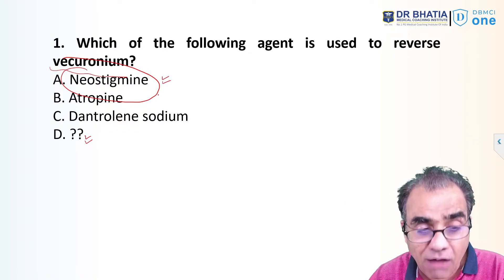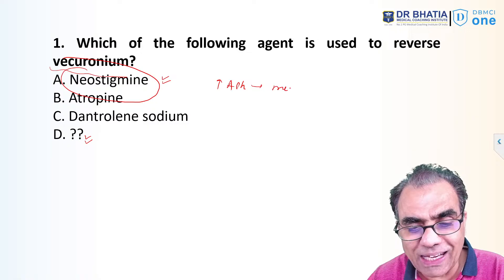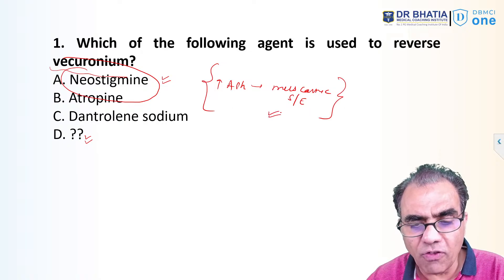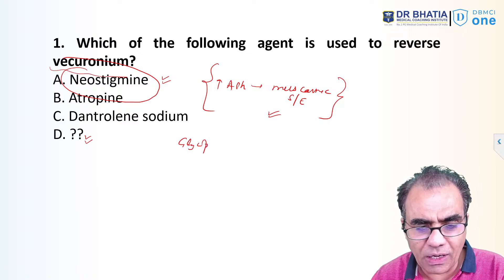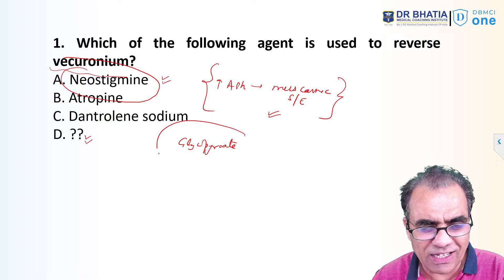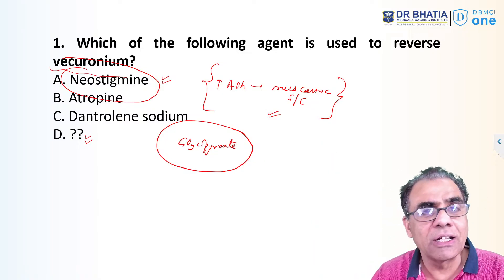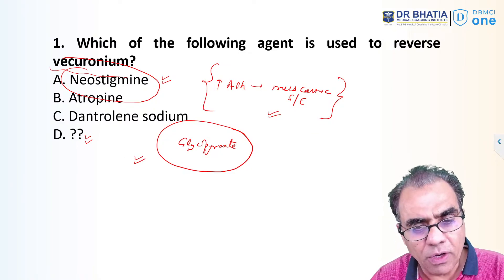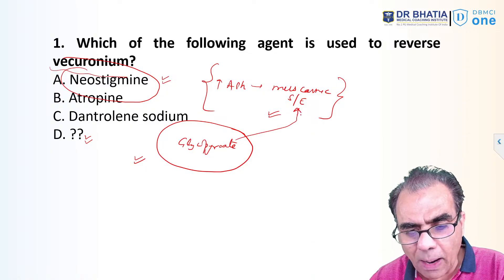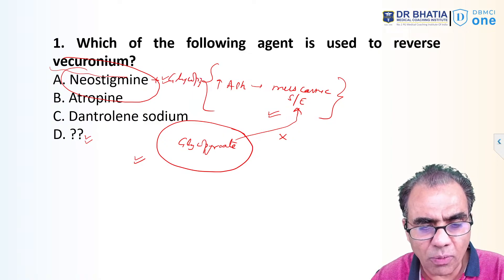By giving neostigmine, a cholinesterase inhibitor, we prevent the degradation of acetylcholine so that more acetylcholine is available at the neuromuscular junction to compete with the non-depolarizers. However, this increased acetylcholine also produces muscarinic side effects. To prevent these, we give an anti-muscarinic drug — atropine or glycopyrrolate. Atropine is avoided because it crosses the blood-brain barrier and can cause CNS excitation and central anticholinergic syndrome. Glycopyrrolate does not cross the blood-brain barrier, so it is preferred. The reversal agent is therefore neostigmine plus glycopyrrolate.